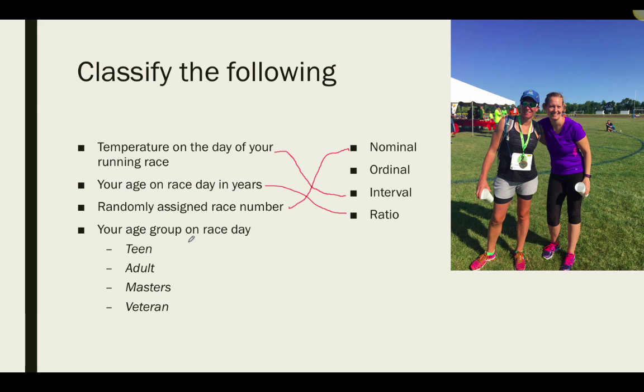Your age group on race day is ranked from youngest teen to oldest veteran. Therefore, this is ordinal. With a little practice, I'm sure you'll be classifying variables like a champ.